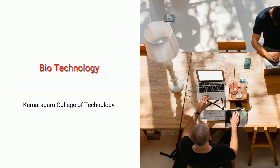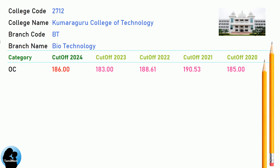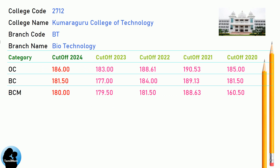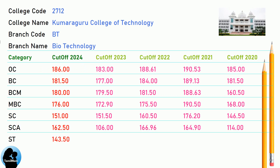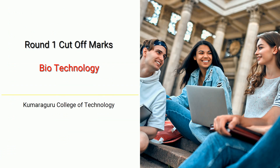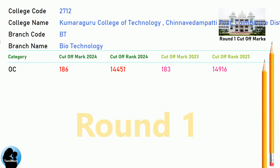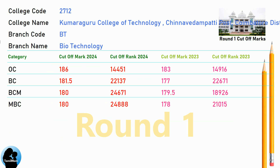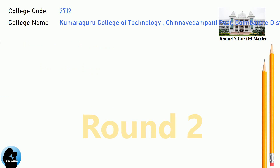DNA cutoff for Kumaraguru College of Technology in Biotechnology. DNA Round 1 cutoff and DNA Round 2 cutoff for Kumaraguru College of Technology in Biotechnology.